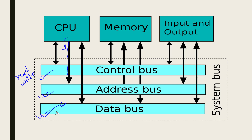The data bus is the path through which data transfer takes place. First, the CPU outputs the memory address on its address bus, and then memory transfers data onto the data bus. The data bus carries binary data between the CPU, memory, and I/O devices.